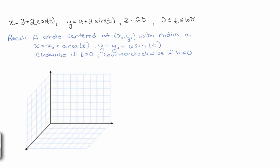Here we're asked to describe the way that this parametric equation is going to look. This is a parametric equation x equals 3 plus 2 cosine of t and y equals 4 plus 2 sine of t and z equals 2t. And t is going from 0 to 6 pi. It gives us a hint that we should remember that a circle in the xy plane with radius a centered at x naught y naught is given by this formula. And we can notice right away that our x and y coordinates match this formula.